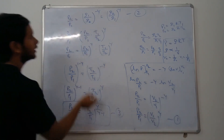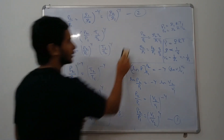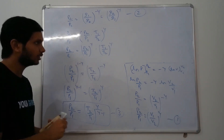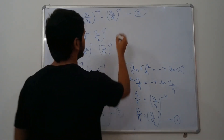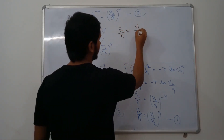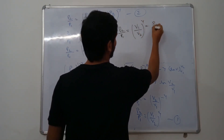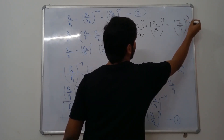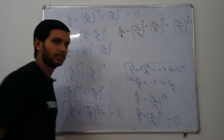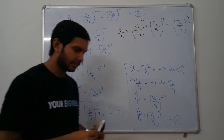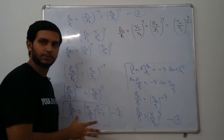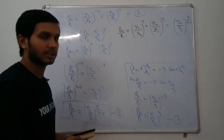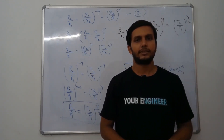This is the third relation: pressure in terms of volume, pressure in terms of density, and pressure in terms of temperature. Matching all three gives the final isentropic flow relation: p2/p1 = (v1/v2)^γ = (ρ2/ρ1)^γ = (T2/T1)^(γ/(γ−1)). The most important relationship is pressure and temperature, and the pressure and gamma relationship.